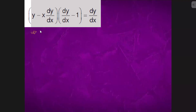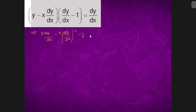We will first expand this. This is what: y times (dy/dx minus x·dy/dx) whole square, minus y plus x·dy/dx equals dy/dx. We will differentiate the equation with respect to x.